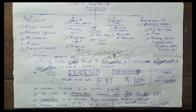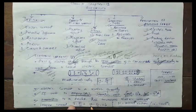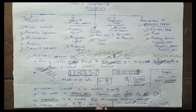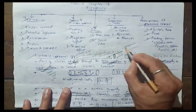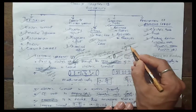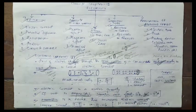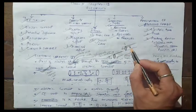What is 1 ampere current? Mathematically, current is I = Q/T. If I want to define 1 ampere: 1 ampere equals 1 coulomb per second. That means if 1 coulomb of charge flows through the cross-section of a conductor in 1 second, we say 1 ampere of current is flowing through that conductor.